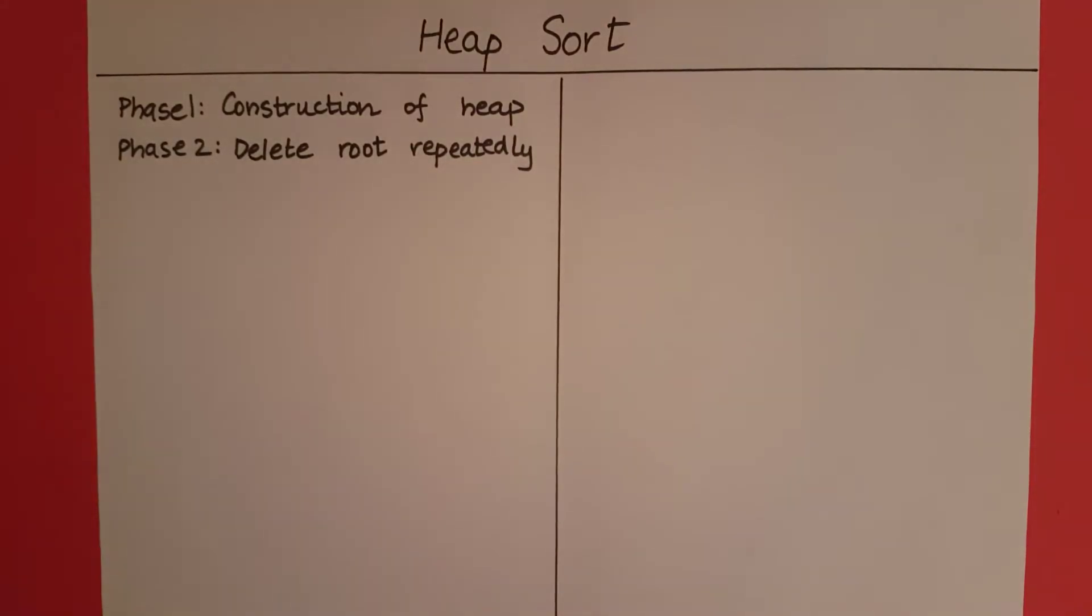So why does this work? Let's say we want to sort elements in ascending order. In that case we will use a min heap. So first we will construct a min heap with all the elements we want to sort.